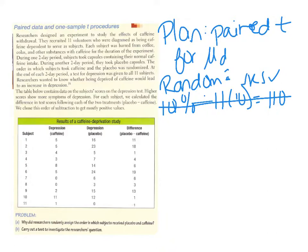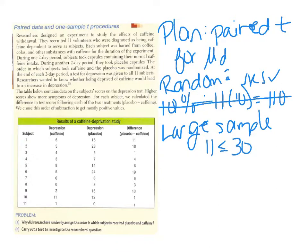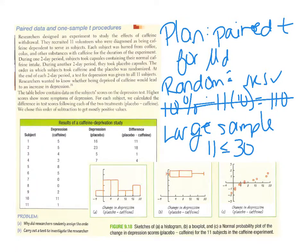Because this is a mean, I check the large sample condition — if it were a proportion, I'd do large counts. Unfortunately I do not meet this condition because my sample size is less than 30, so I need to check my graphs. When I check my graphs, I don't see any strong skew or outliers, so I can proceed with normal calculations. Remember, you would need to draw one of these graphs on the exam.